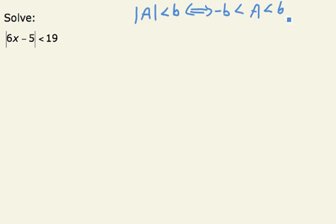So this is the fact I'm going to use to solve this inequality. If I rewrite this, I can say that 6x minus 5, the number that's replacing A, must lie between negative 19 and positive 19.